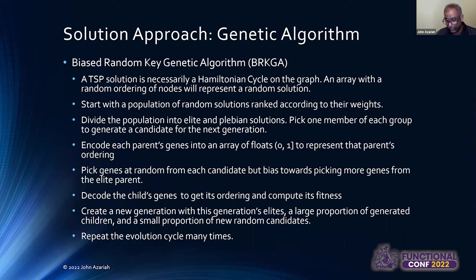And we'll do that by trying to take as much of, we'll create the gene for each of the children from either the elite parent or the plebeian parent, and we'll bias towards picking more of the genes from the elite parent. That's the biased key piece. Then we'll record the child's genes to get its ordering, the ordering that it represents, compute its fitness, and then we'll create a new generation where we keep all the elites from this generation, a large number of children that we now generated, which presumably are going to be better, and then to break out of any sort of local minima that we get, we'll introduce some fresh blood in terms of adding some new random candidates in there to try and see if they can actually maybe randomly become better than or form part of the next generation's elites.